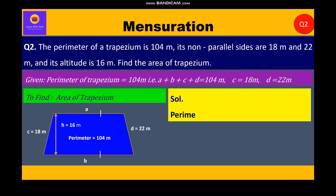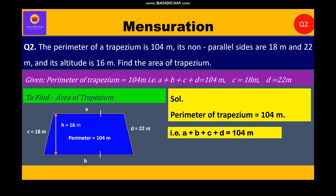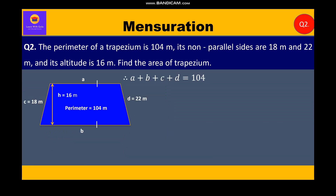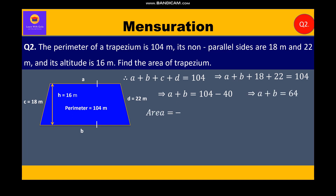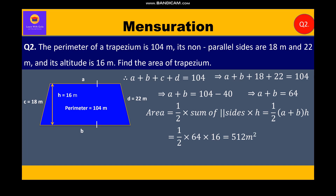Perimeter of trapezium is equal to 104 meters, that is a plus b plus c plus d is equal to 104 meters. Now we shall substitute the values of c and d and we get a plus b plus 18 plus 22 is equal to 104. Since 18 plus 22 is 40, a plus b is equal to 104 minus 40, therefore a plus b is equal to 64. Now, area of trapezium is equal to half into sum of parallel sides into height, which is half into (a plus b) into height. Substituting the values: half into 64 into 16 is equal to 512 square meters.